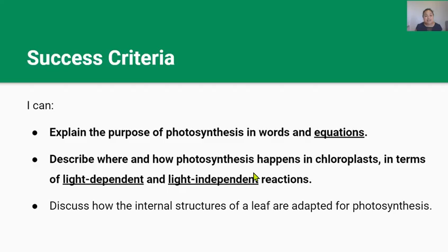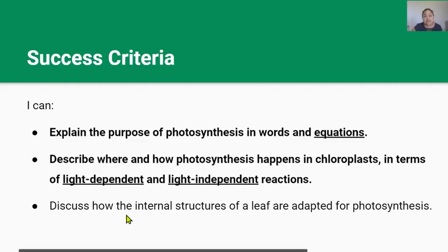By the end of this lesson you should be able to explain the purpose of photosynthesis in words and equations, describe where and how photosynthesis happens in chloroplasts in terms of light-dependent and light-independent reactions, and discuss how the internal structures of a leaf are adapted for photosynthesis.